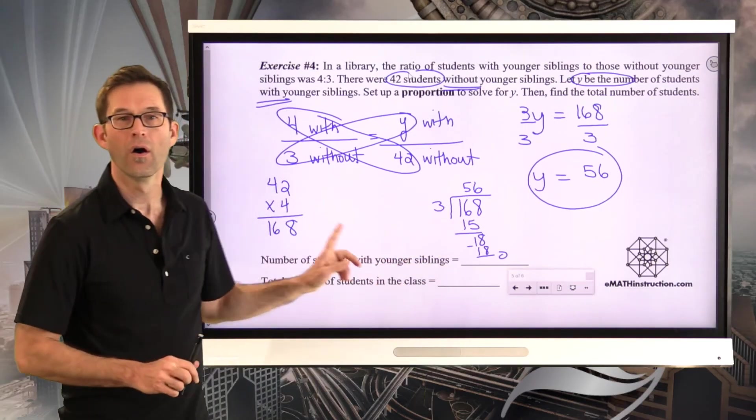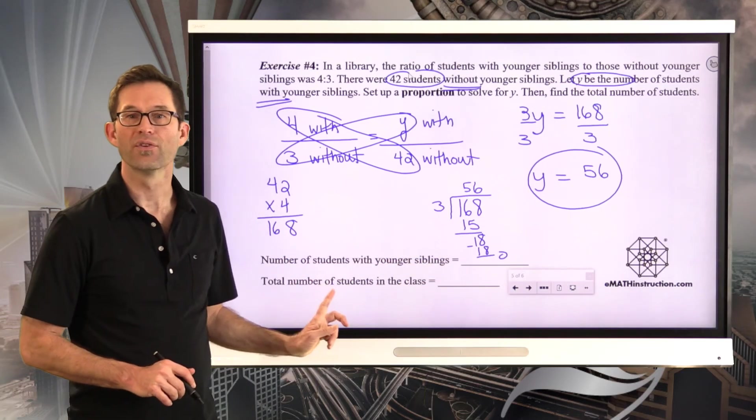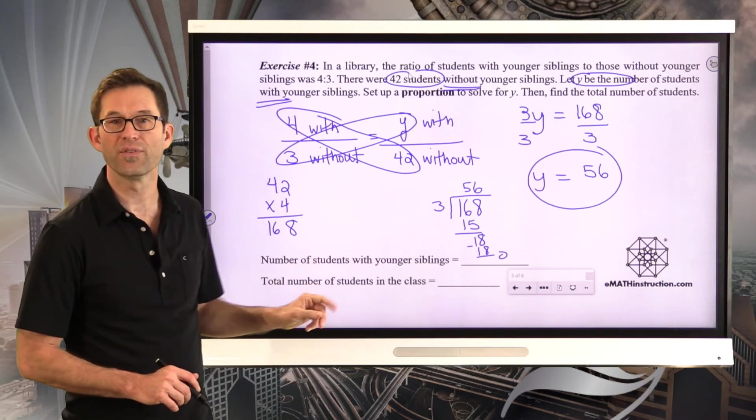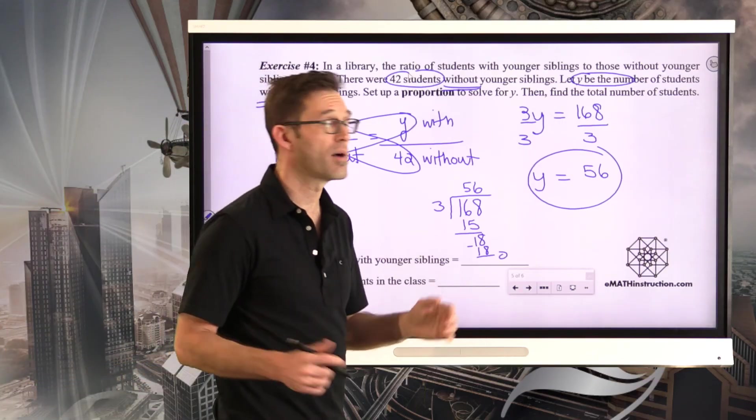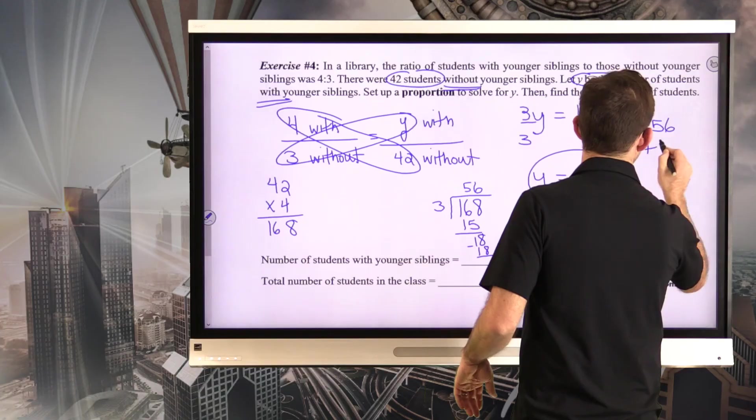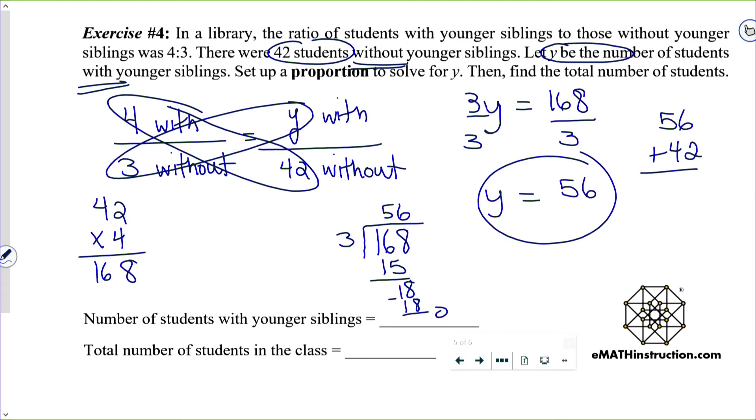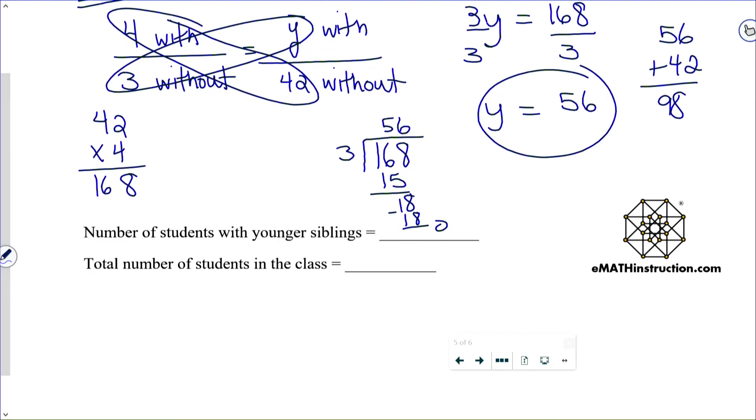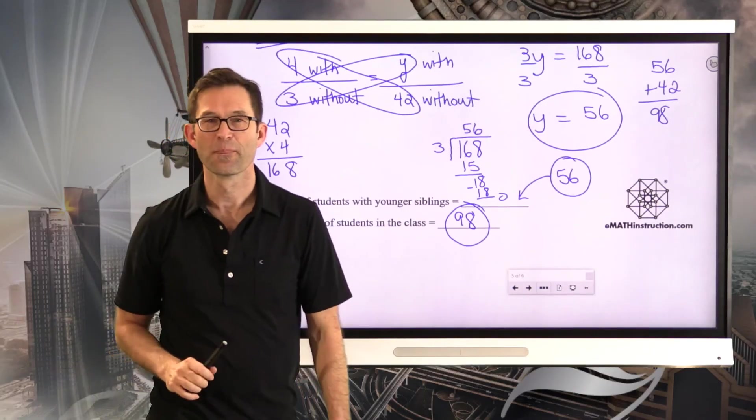Now I'm going to divide both sides by 3. And I find that there must be 56 students with younger siblings. 56 with, 42 without. The total number of students will simply be 56 plus 42, because you either have younger siblings or you don't. So we'll find that there are 98 total students.